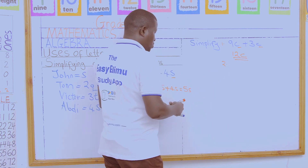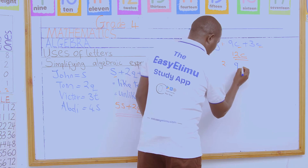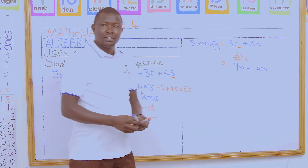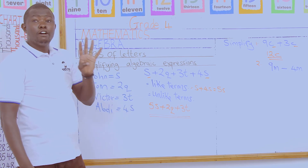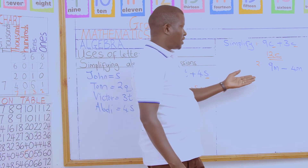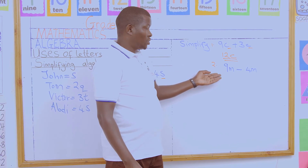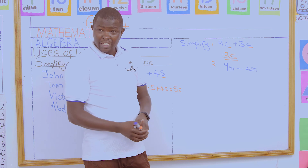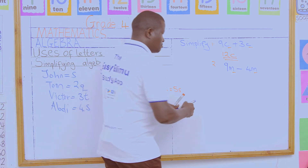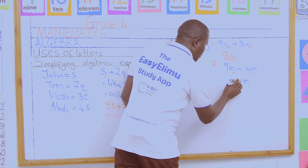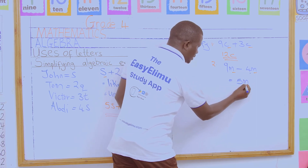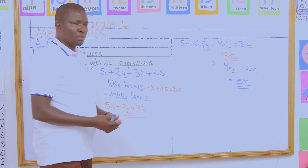Number two to simplify is 9M take away 4M. We have learned how to form algebraic expressions involving the four arithmetic operations: addition, subtraction, multiplication, and division. We identify whether we have like terms. We have 9M and 4M — M and M are like terms. So we take 9 take away 4, which gives us 5. The simplified answer is 5M.